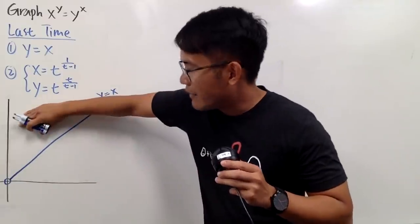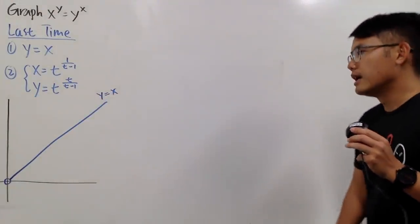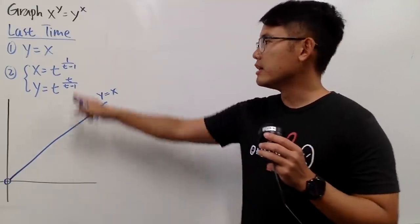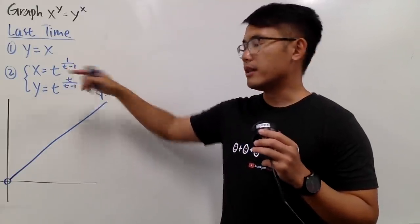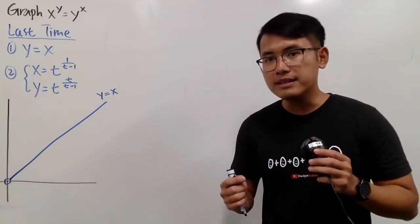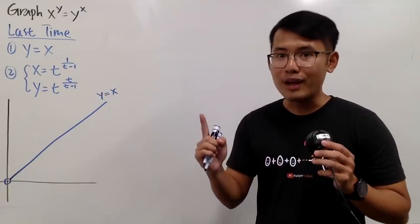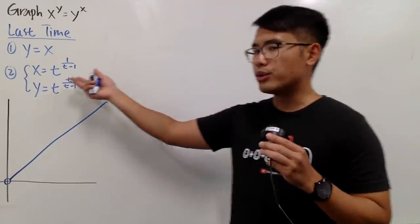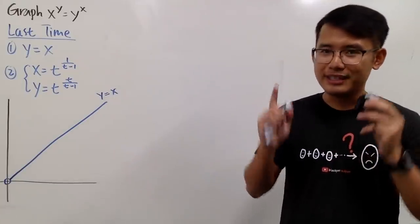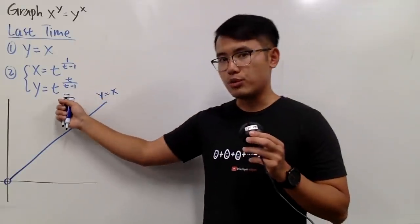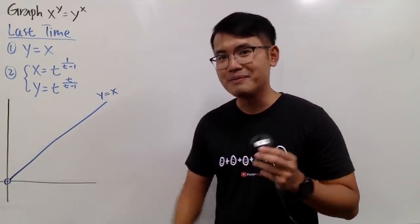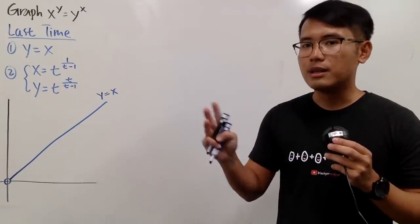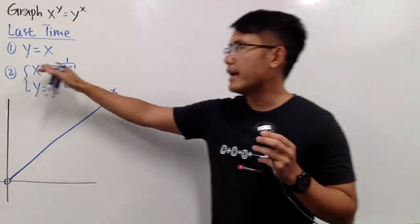We can expect whatever you have on one side, you can just flip and get something on the other side. Now, looking at the parametric equations, I see that t=1 is a trouble number because I get 1 over 0, which is undefined — that's no good. But we still want to investigate what happens when t approaches 1. So let's take limits: t approaches 0 plus, t approaches 1, and t approaches infinity, and see what will happen to the x and y values.